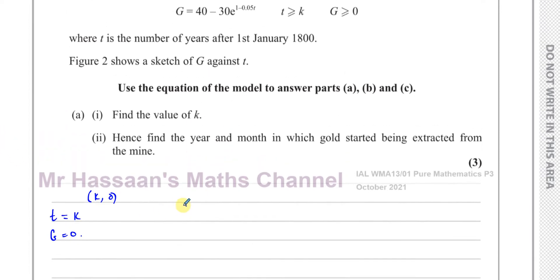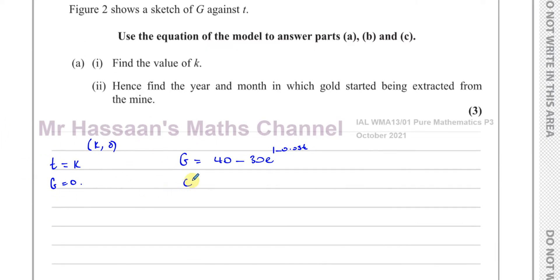The equation is G equals 40 minus 30e to the power of 1 minus 0.05t. If I replace the G with 0 and I replace the t with k, and I solve for k. Well, I can first of all add 30e to the power of 1 minus 0.05k to both sides. Then I can divide both sides by 30. So I have e to the power of 1 minus 0.05k equals 40 over 30, which is 4 over 3.